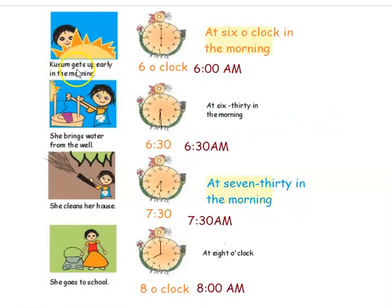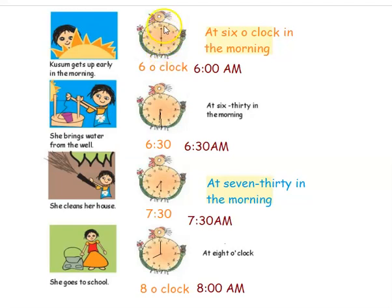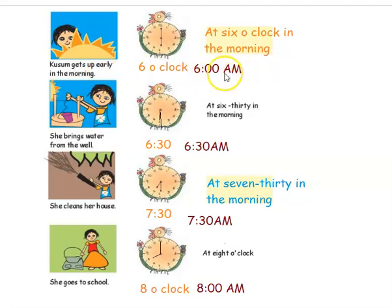The first one is Kusum gets up early in the morning. The time shown on the clock: the shorter hand is at 6 and the longer hand is at 12. The shorter hand represents the hour and the longer hand is the minute hand. So it is 6 hours and 12, which means it is 6 o'clock. Kusum wakes up at 6 o'clock in the morning, so it is 6 a.m. Since it is morning, we write it as a.m.